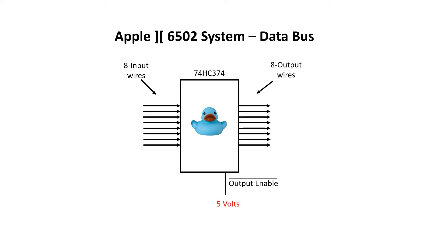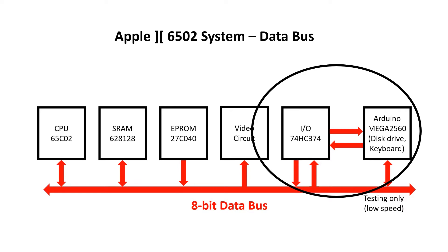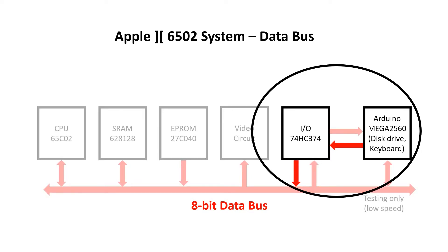The chip has a signal called Output Enable, which also has a bar over it — you'll remember that the bar indicates this is active when there's 0 volts on the wire. So when we have 5 volts on this wire, the chip doesn't output anything; it's effectively disconnected from the output wires. But when we change the signal to 0 volts, we're enabling the output, and the stored value is presented on the output wires. The Output Enable signal means we can wire the output of this chip directly to the data bus, and it will only set the voltage when we want it to — specifically when Output Enable is at 0 volts.